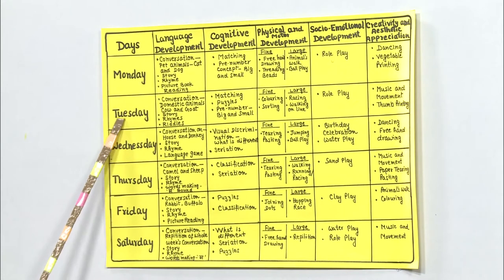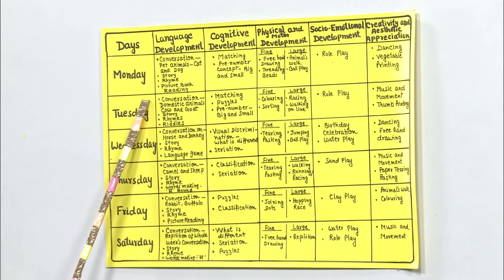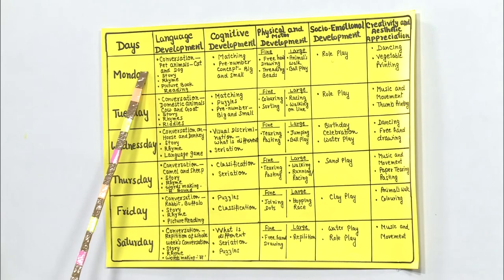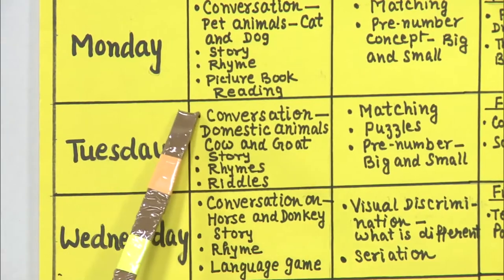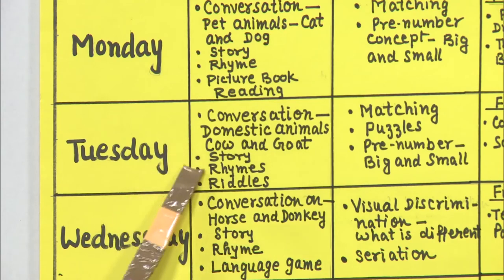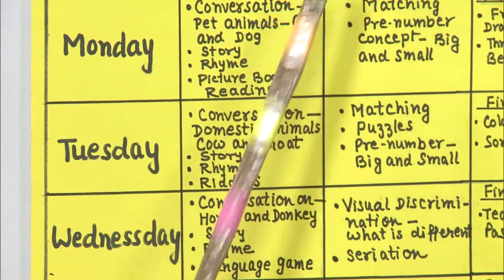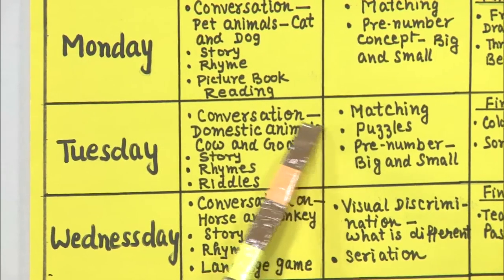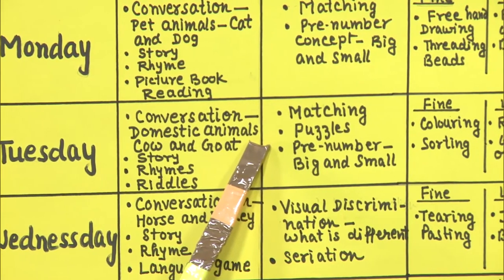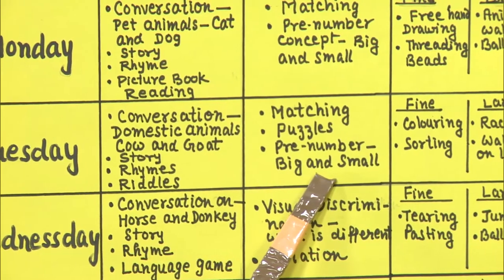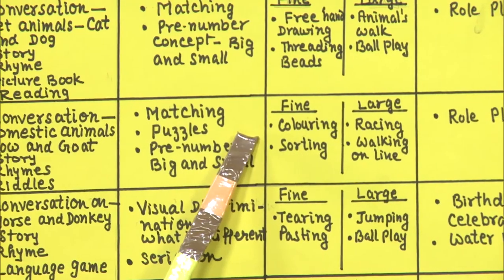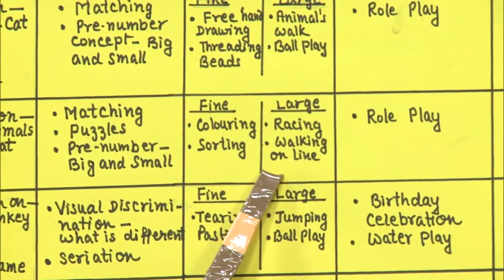On Tuesday, for language development, we will have a conversation on domestic animals — cow and goat — along with stories, rhymes, and riddles. For cognitive development: matching activity again, puzzles such as two or three piece puzzles, and the pre-number concept of big and small. For fine motor development: colouring and sorting. For large motor: racing and walking on a line.